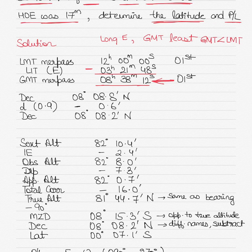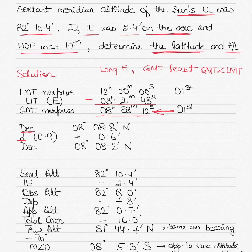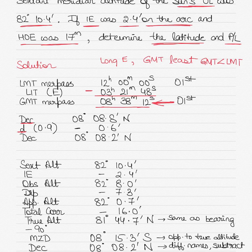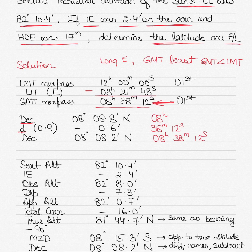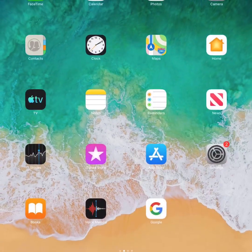Using this GMT time, we find the declination and the D value. We go back into the nautical almanac for 1st of September at GMT 8 hours. We'll find the declination for 8 hours and then apply a correction for 38 minutes and 12 seconds to get the declination for 08 hours 38 minutes 12 seconds.